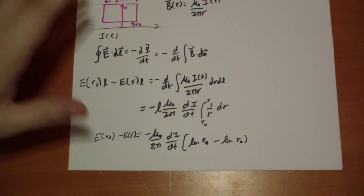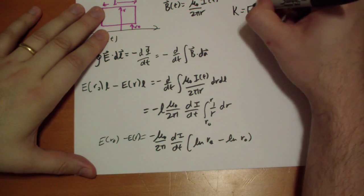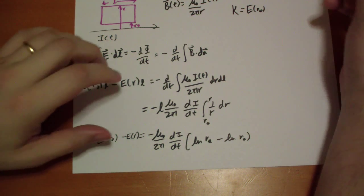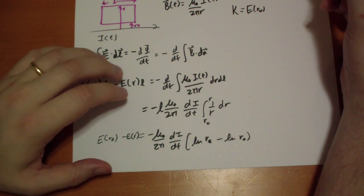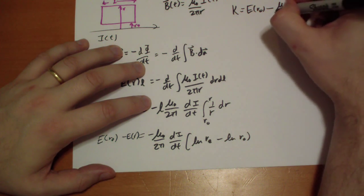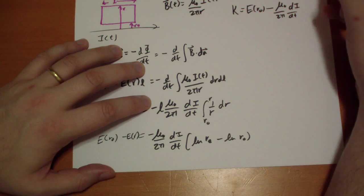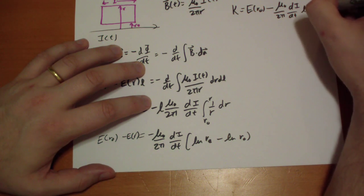Now he uses a fancy trick here where he says K is going to be equal to E of r naught minus mu naught over 2 pi d i by dt times log of r naught.